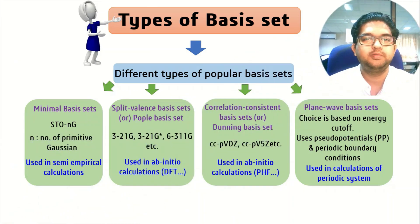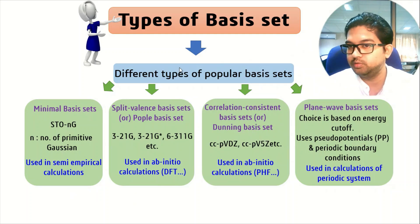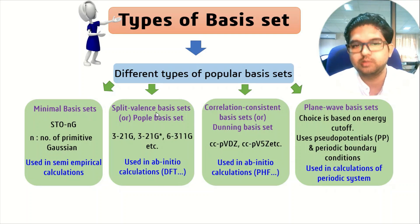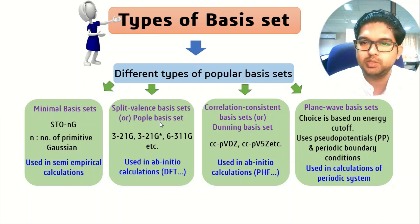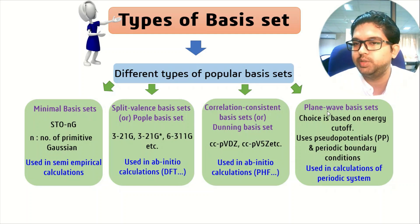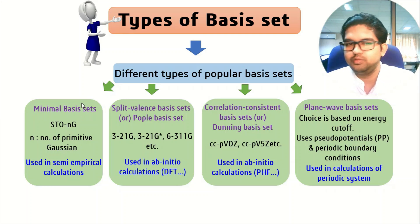What are the different types of basis sets? Generally, basis sets are divided into four types. First is the minimum basis set. Another is the split valence basis set, also known as the Pople basis set. Third, we have the correlation consistent basis set, also known as the Dunning basis set. And we have the plane wave basis set. All of these basis sets have different uses.